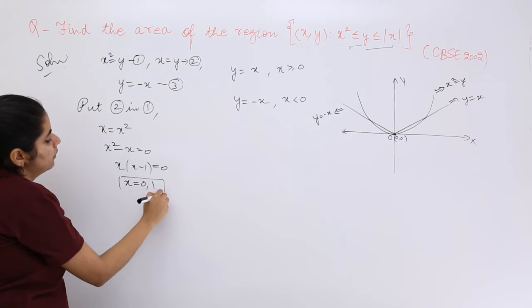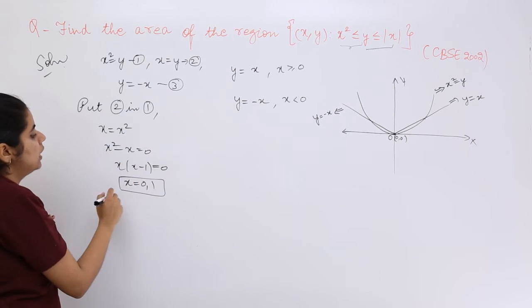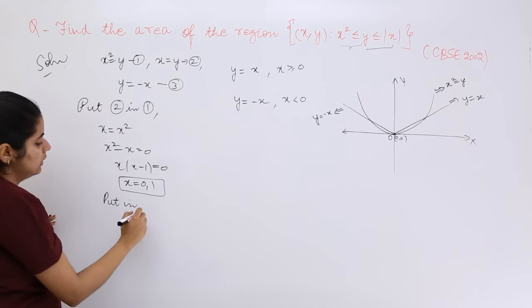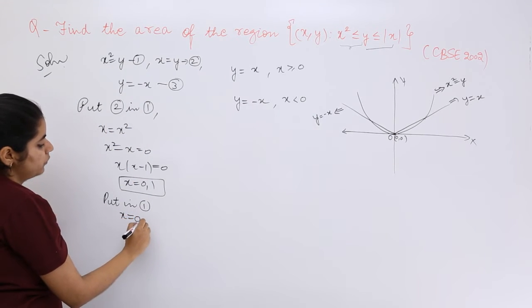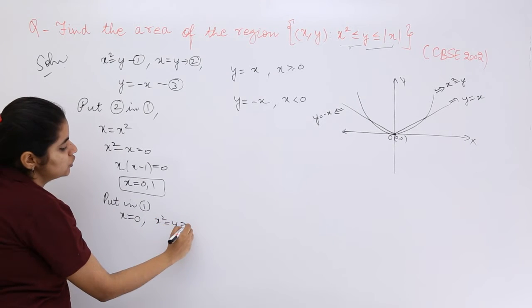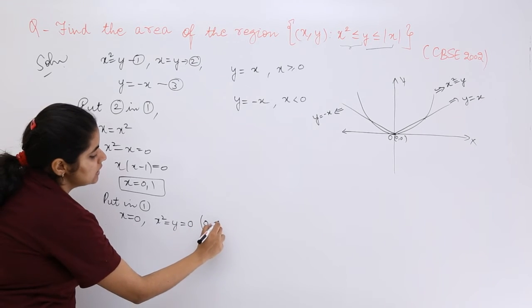So this is 1. When I put the same thing in 1, x = 0 means x² = y which equals 0, so y = 0. So we have 1 point as (0,0) which is the origin of the intersection.